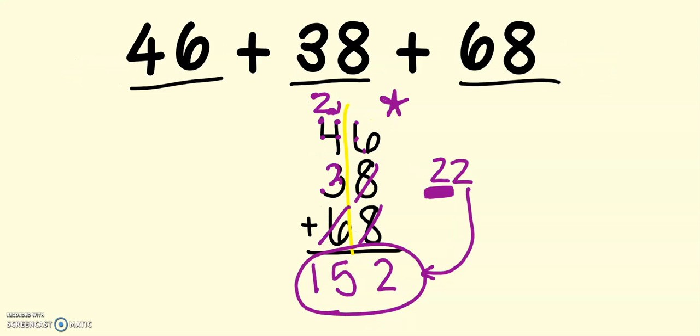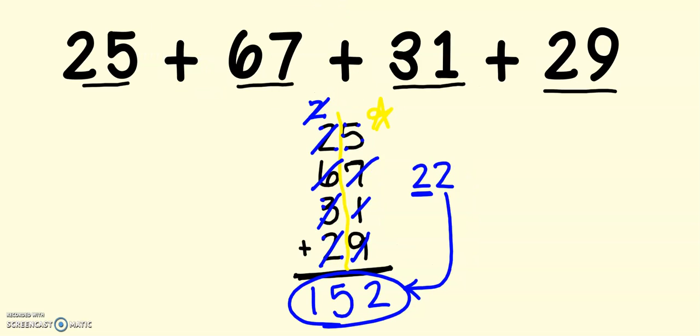It is. And over here, I added 3 numbers. But in this problem, I added 4 numbers. But just like last time, I had 2 new tens. That's why I put a 2 up at the top instead of just a 1. How about let's try one more practice together since we got the same answer for this problem.